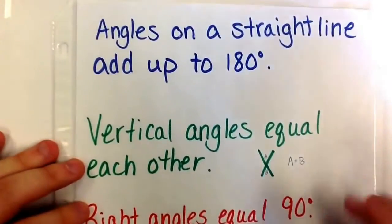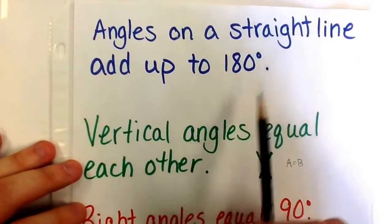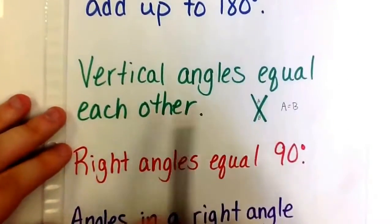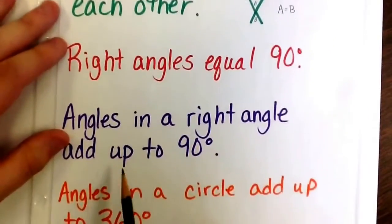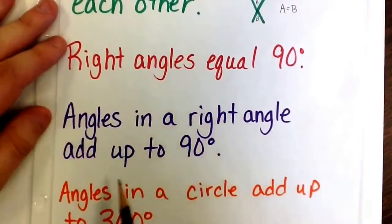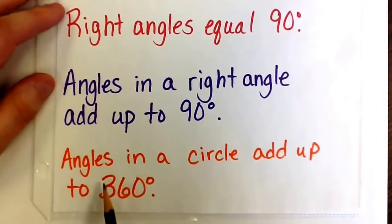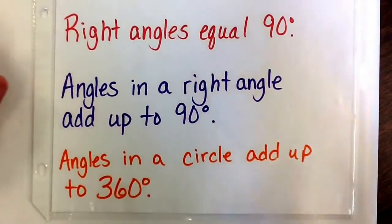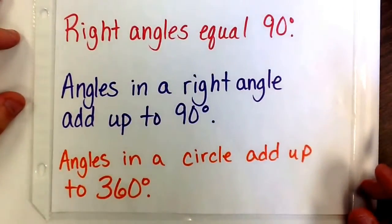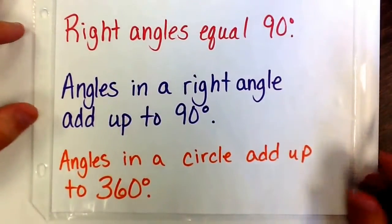Today in class we added one thing, so I want to add one thing to my little reference sheet. We've been talking about angles on a straight line add up to 180, vertical angles equal each other, right angles equal 90, and angles in a right angle add up to 90. But I also want to add now that angles in a circle add up to 360 degrees. And that's what we started doing today in class.